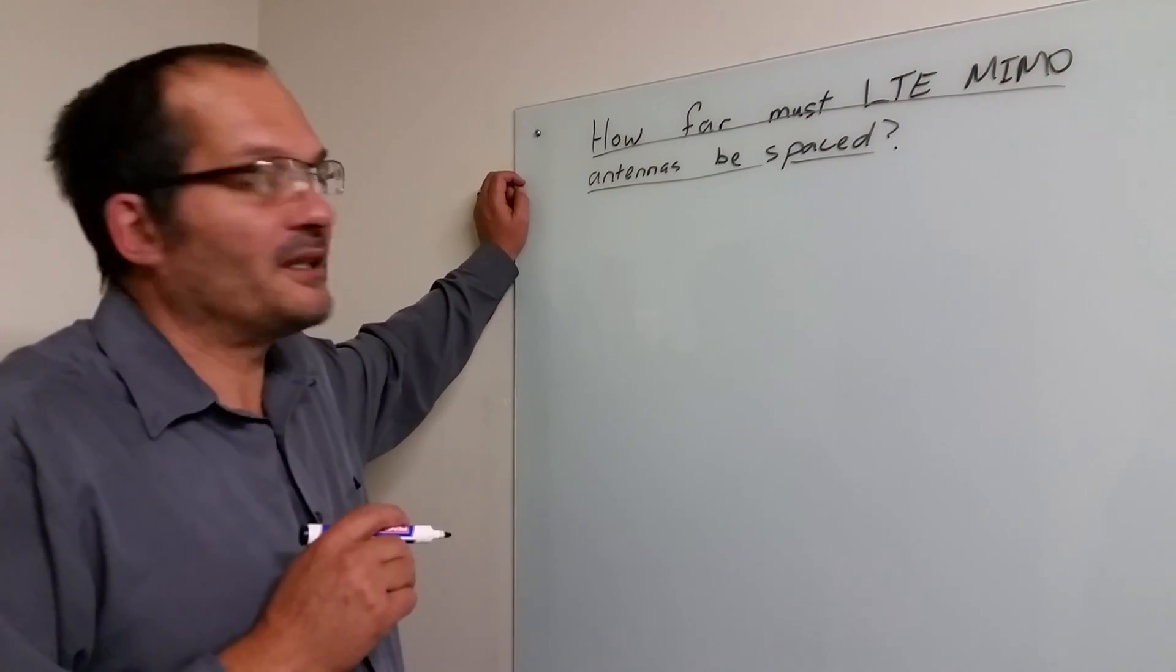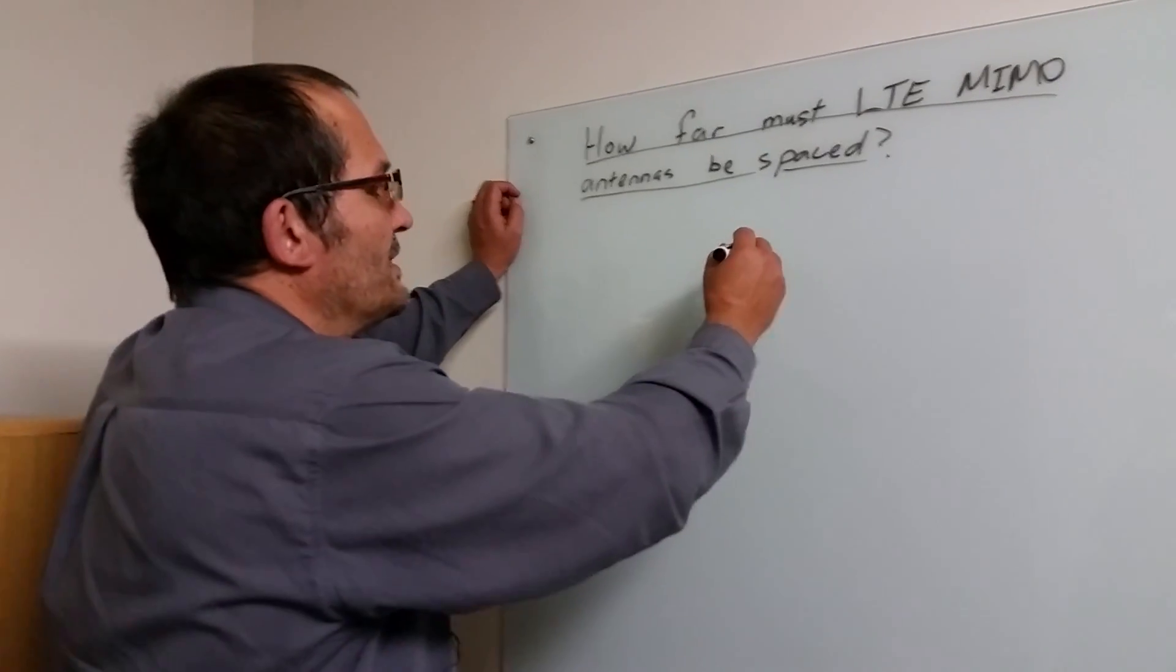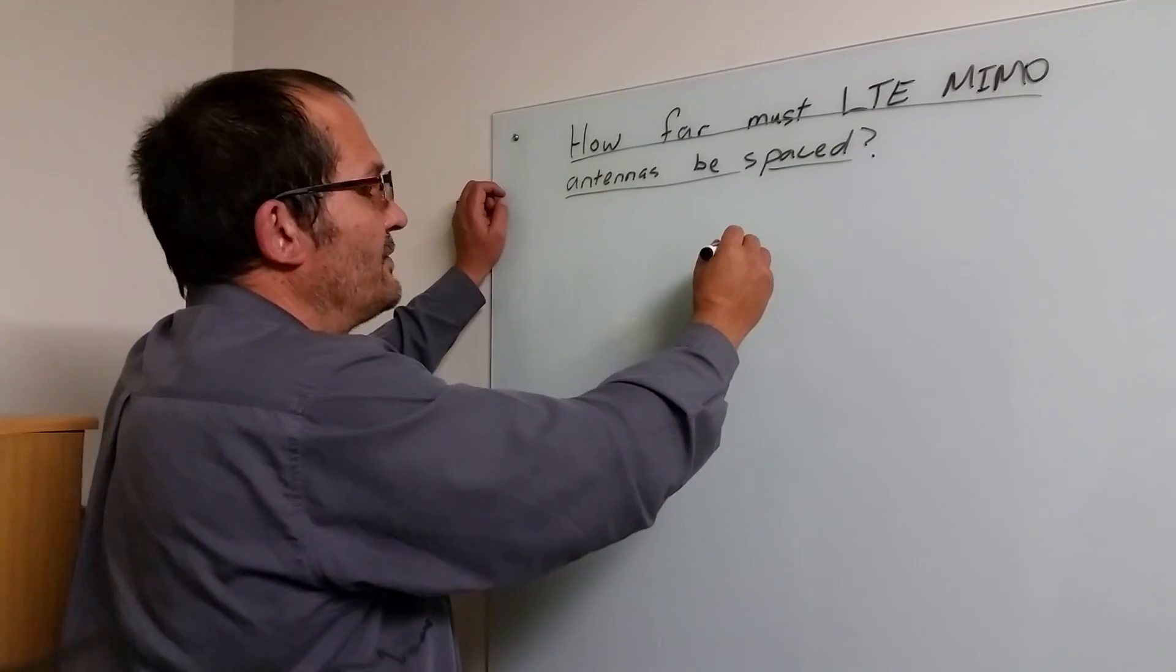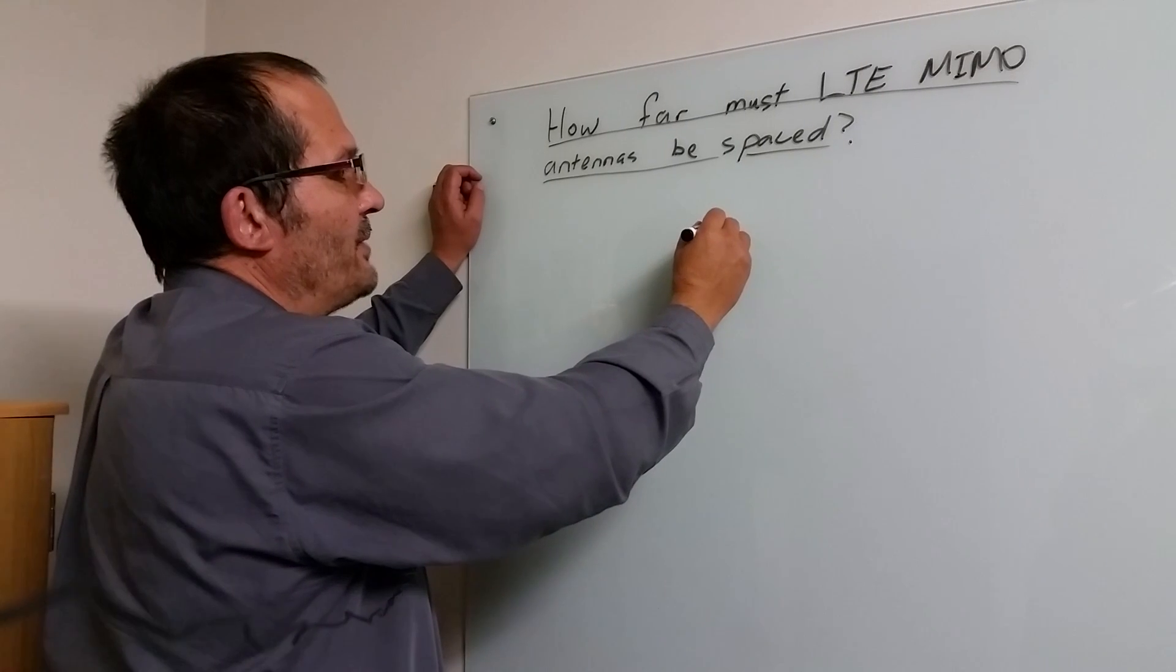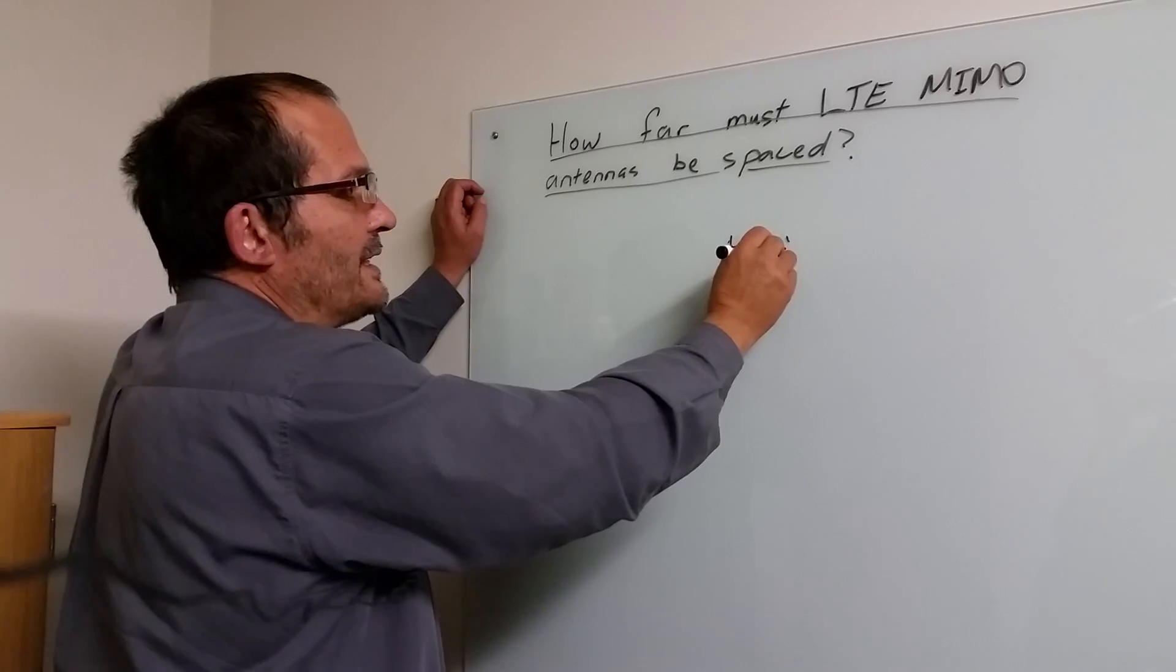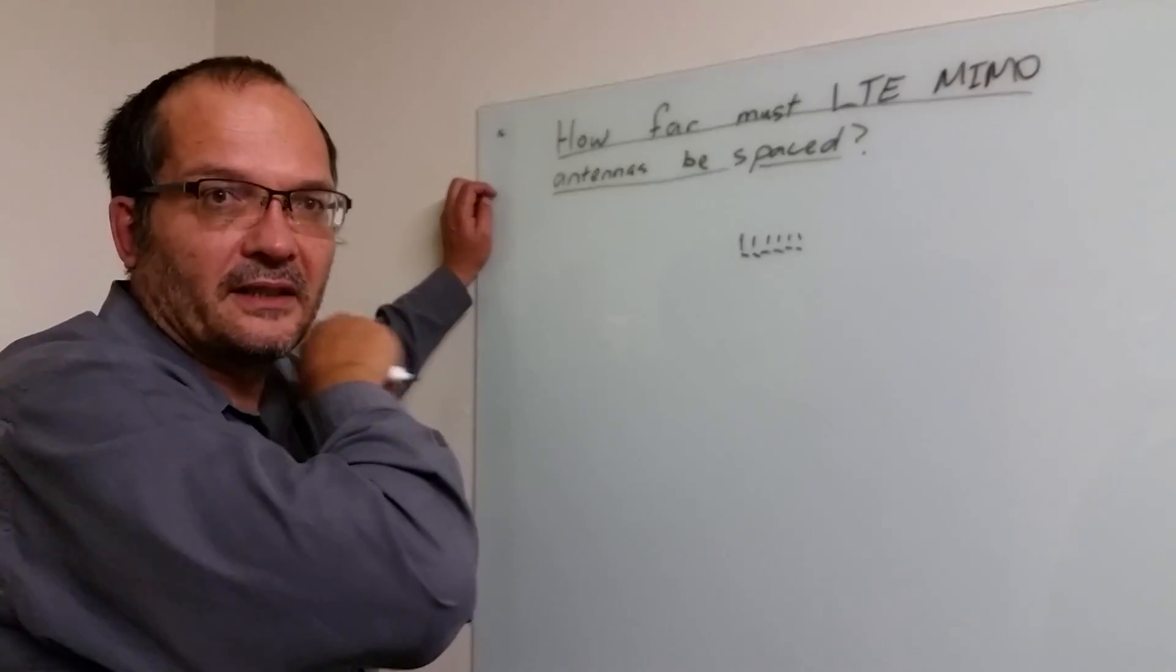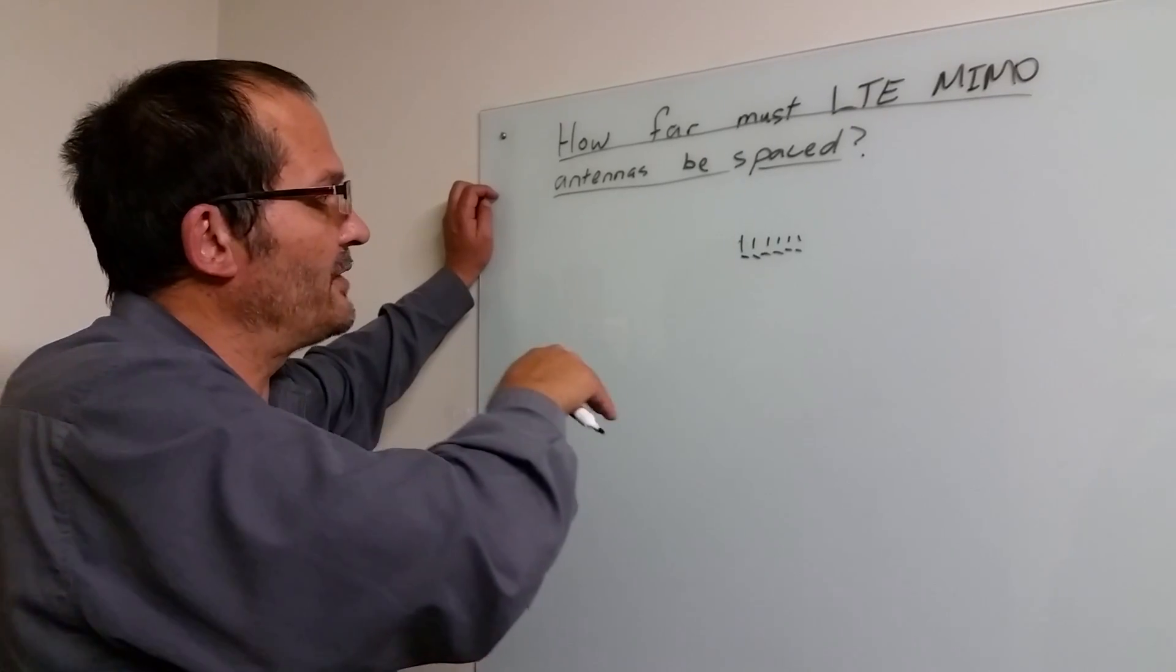How far must LTE MIMO antennas be spaced? That's if you use LTE with two antennas. Now firstly, if you take two linear antennas, for example, a log periodic where one is vertical and the other one is horizontal, and we sell brackets to allow you to do that, they can be spaced as close as you want, as long as they don't touch each other, because that's two different polarizations.